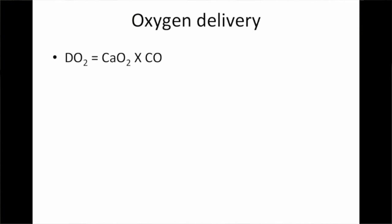Oxygen delivery is defined as arterial oxygen content times cardiac output, giving us DO2. The normal value is approximately 1,000 mL of oxygen per minute. It's important to note how much more oxygen is delivered than what is required to maintain normal homeostasis, and how much reserve the body has — which helps us appreciate the degree of derangement in patients with cardiogenic dysfunction or impaired oxygenation from ARDS and other forms of acute lung injury.